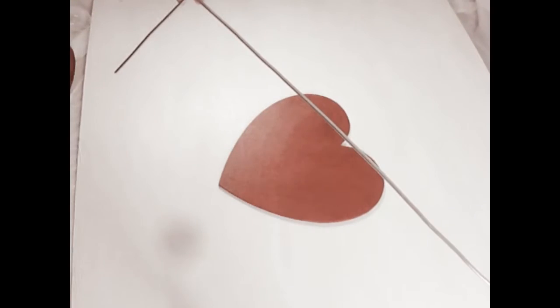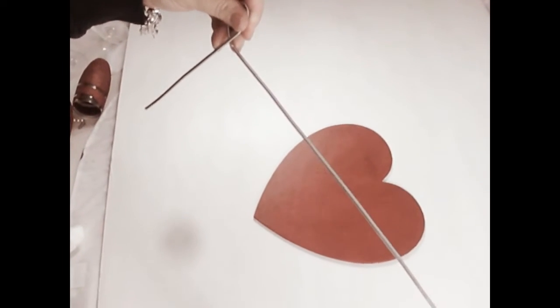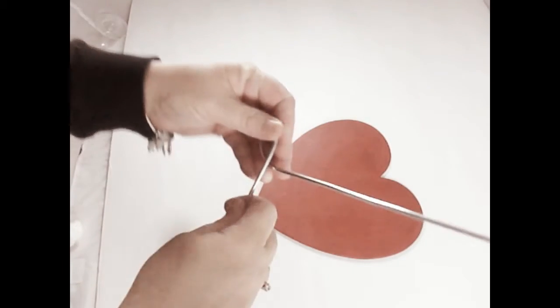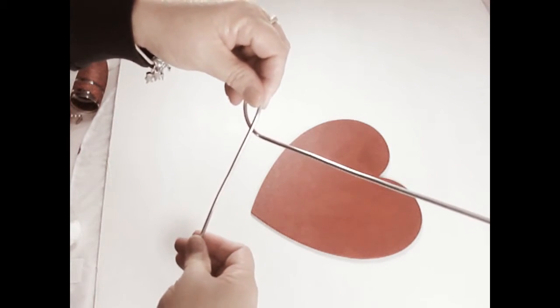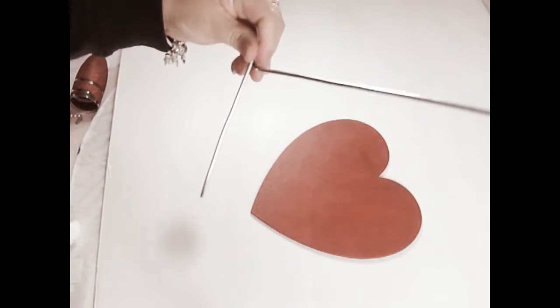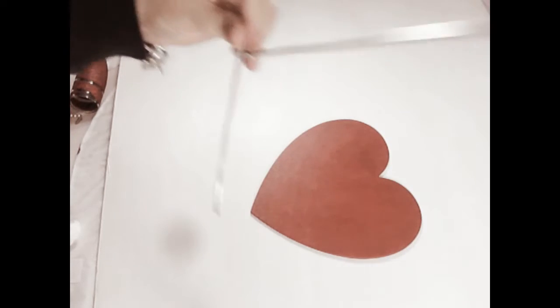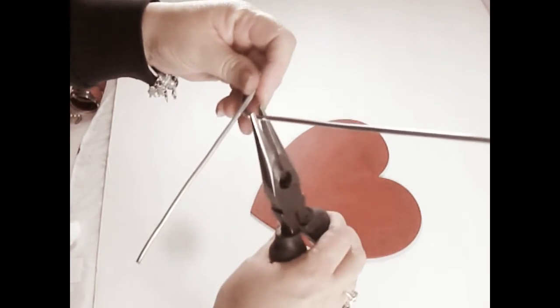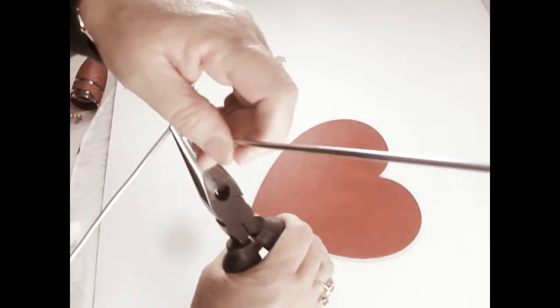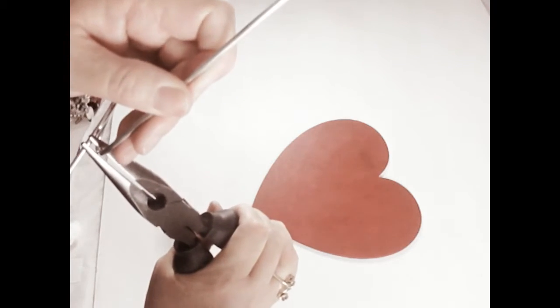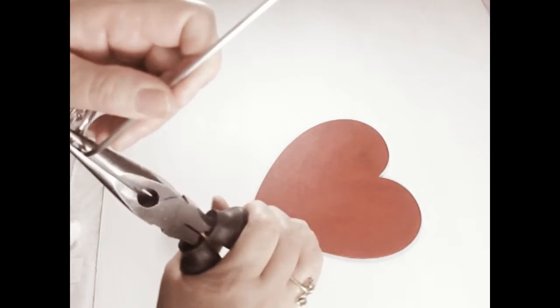Hopefully you can see this. It's kind of hard with the wire, but I made a little loop right here. This will be the part that actually goes into the cake. Then I'm going to take my needle nose pliers and pull up one side.